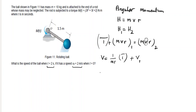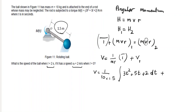From here it's straightforward. The velocity equals one over m — which is 10 kilograms — times r — which is 1.5 meters — times the integral of the torque function: 3t squared plus 5t plus 2, dt, plus v1 which is 2 meters per second. Integrating this with respect to t gives t cubed plus 5/2·t squared plus 2t.